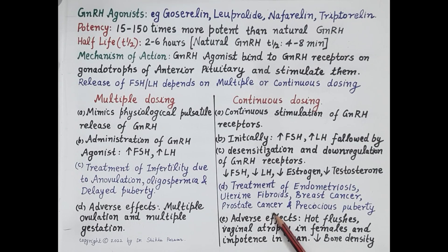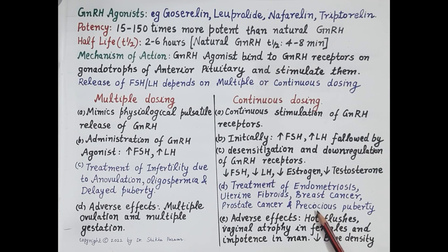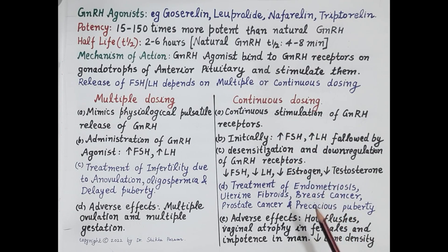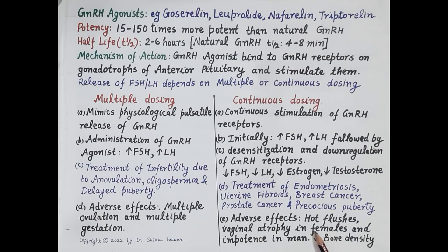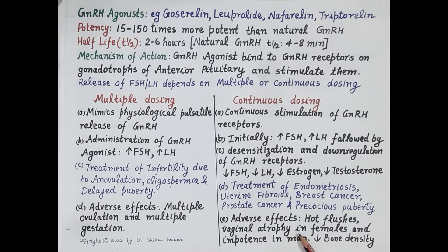This continuous approach is also useful in the treatment of precocious puberty — that is, sexual maturity that begins early in boys and girls. Adverse effects of continuous GnRH agonist administration include hot flushes and vaginal atrophy in females due to the continuous fall in estrogen levels. In men, reduced testosterone can cause impotence. Reduced bone density is also observed in both males and females.